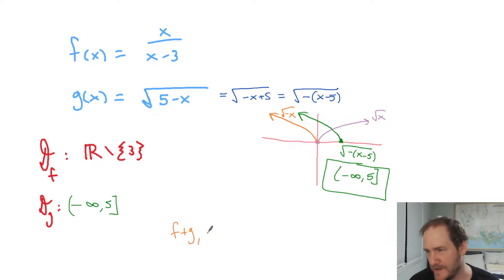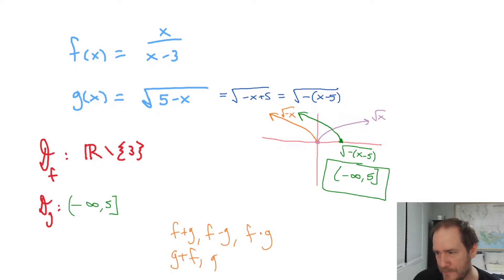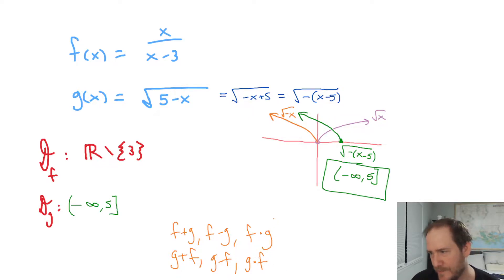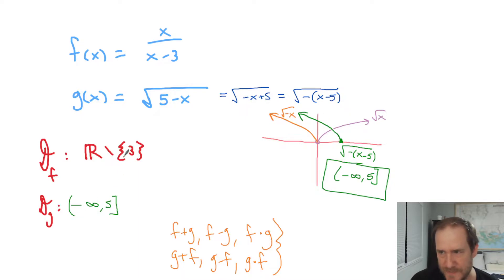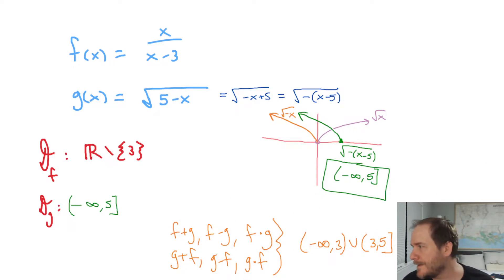Once you've got those two domains, we can knock out three function operations fast: F plus G, F minus G, and F times G all have the same domain. Really it's six because G plus F, G minus F, and G times F are also covered — commutativity or not, the domains match. All of these are just the intersection of the two domains, so the domain is negative infinity up to three, not including three, then three to five.